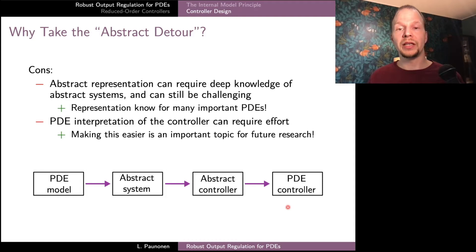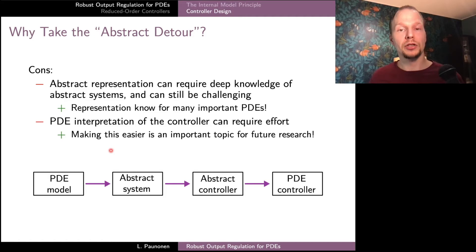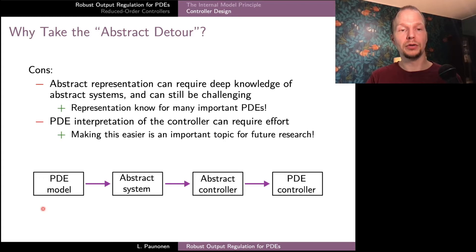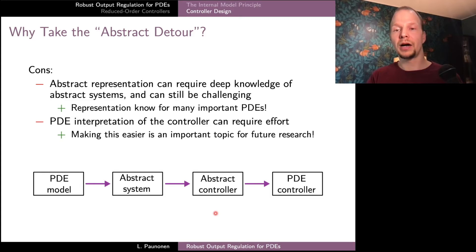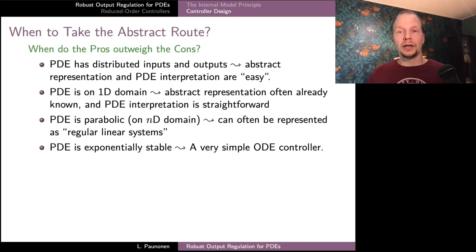Also in the last step, converting the abstract controller into a PDE controller can similarly require some effort and knowledge of abstract systems design — this is one part which hasn't been studied so much in the literature. But the take-home message of the abstract approach is that if we start with a PDE model and proceed via the abstract domain to find a controller, the controller dynamics do still correspond to some kind of PDE model. So there is no magic conversion producing a radically different type of controller than our original PDE model.